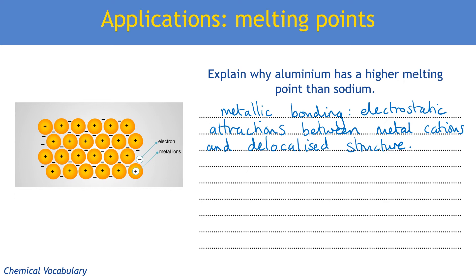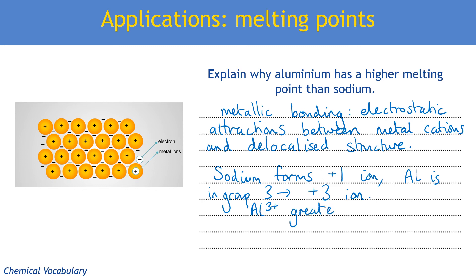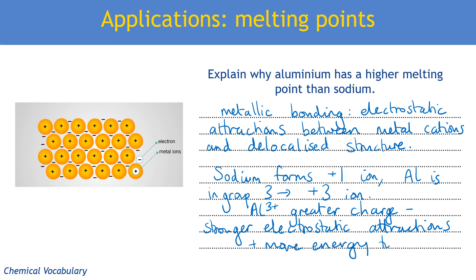Although aluminium and sodium both have that structure of cations and delocalised electrons, the difference is their group, and therefore the charge on their ions. Sodium is in Group 1 and forms a 1+ ion, whereas aluminium is in Group 3 and forms a 3+ ion. This means the aluminium 3+ ion has a greater charge, resulting in stronger electrostatic attractions and therefore more energy required to overcome them, which gives aluminium a higher melting point.